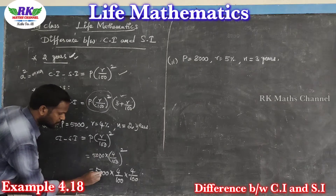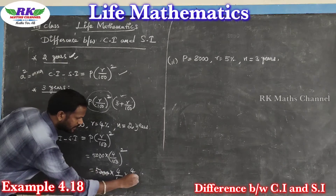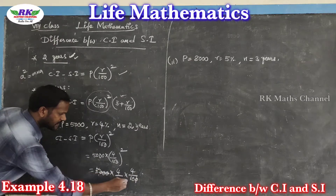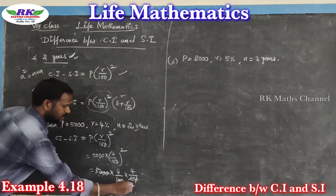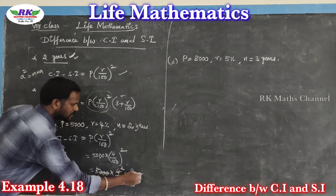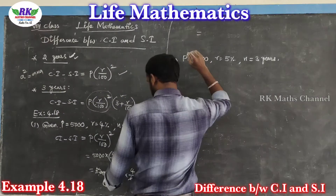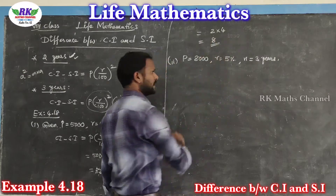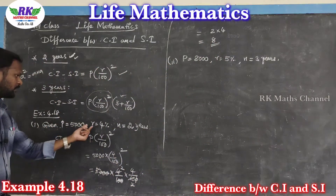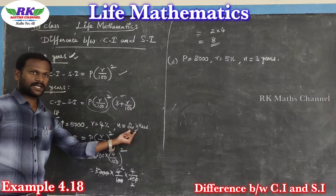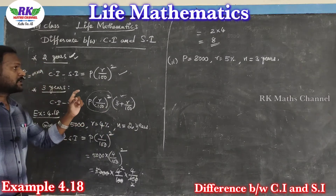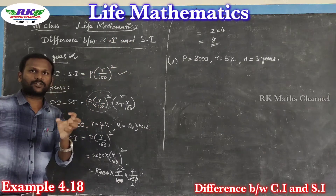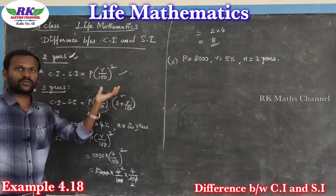Working through the calculation: 3 zeros, 2 zeros, 1 zero, then 5 ones, 2 ones, 2 twos — result is 8. So for a 5,000 amount at 4% per annum for 2 years, the difference between compound interest and simple interest is 8 rupees.